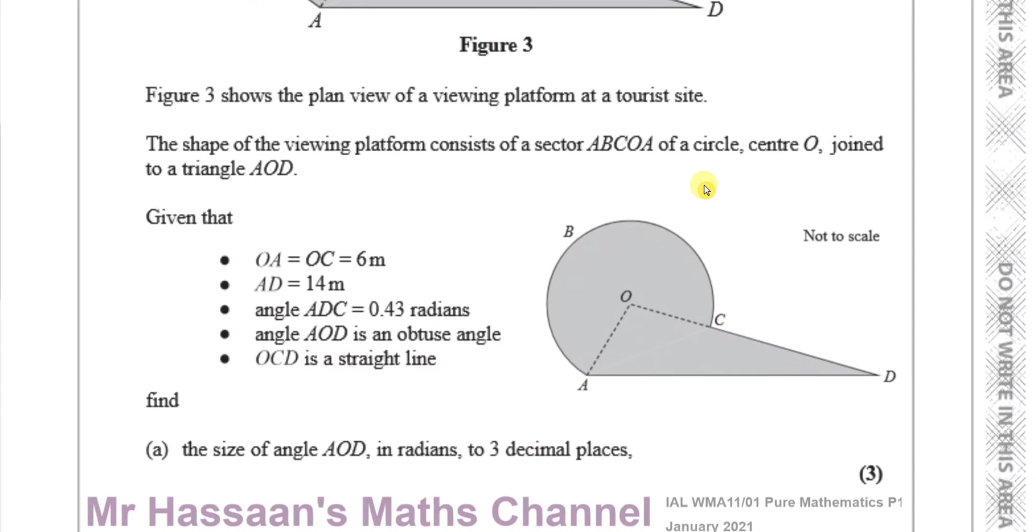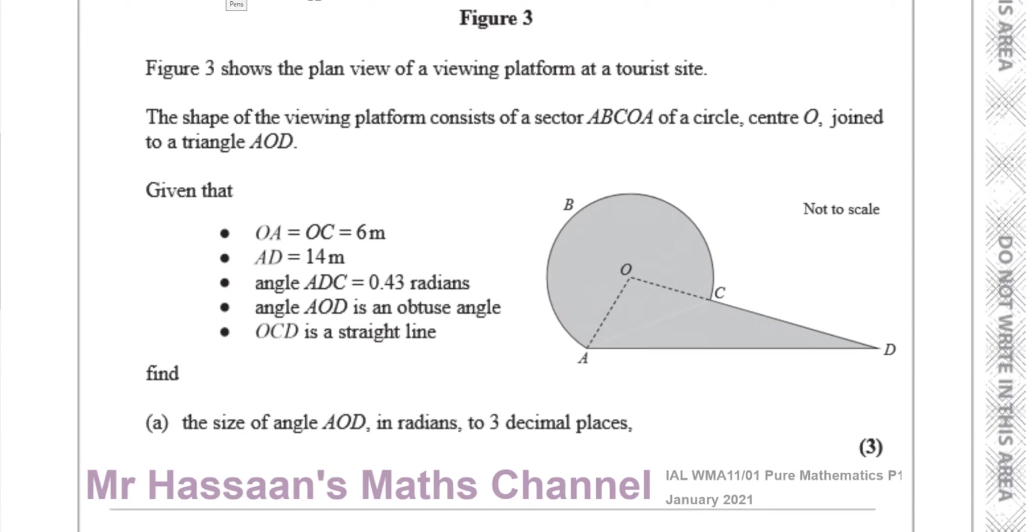Given that OA equals OC equals 6 meters, so I'm just going to upload the diagram here so I can see it more clearly. So we know that OA and OC are both 6 meters, radius of the sector. Angle ADC is 0.43 radians. That's ADC, this one here. That's 0.43 radians. Very important that we realize that. AOD is an obtuse angle. That's obtuse, it's not an acute angle. And OCD is a straight line.